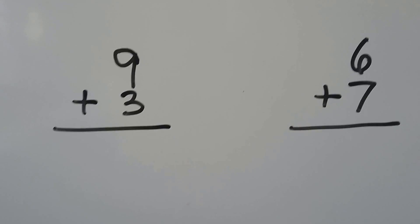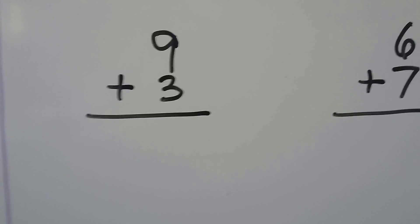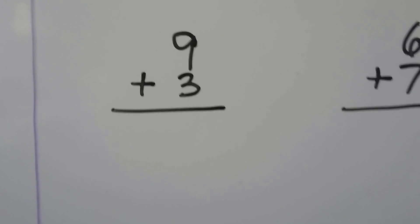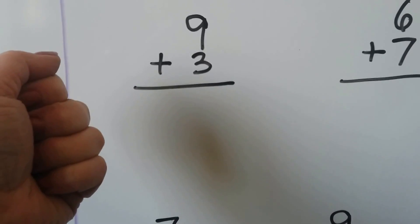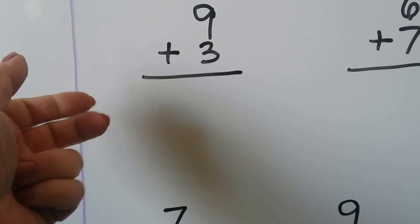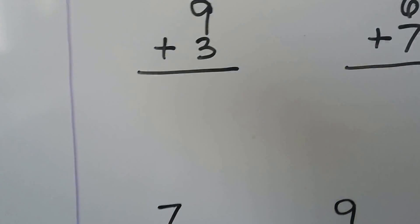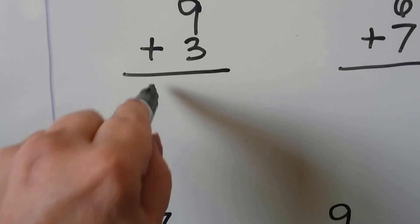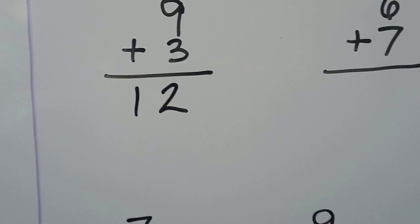9 plus 3. We can count on 3. We can start at the 9 and count 3 more: 9, 10, 11, 12. 9 plus 3 is equal to 12.